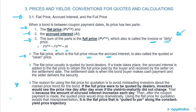It is the flat price that is pulled to par along the constant yield price trajectory. That's why in the last LOS we looked at the bond that was issued at a premium and pulled down to par — it's the flat price that follows that constant yield price trajectory.